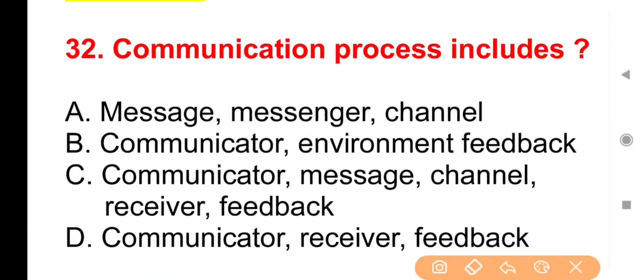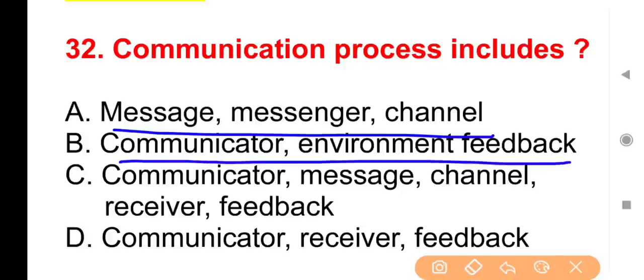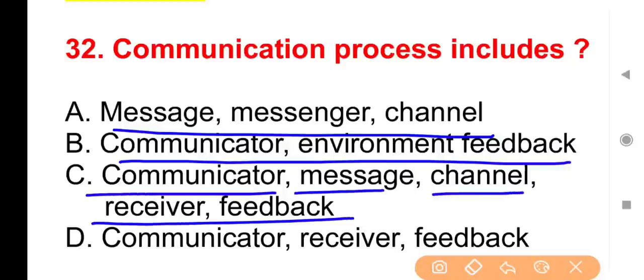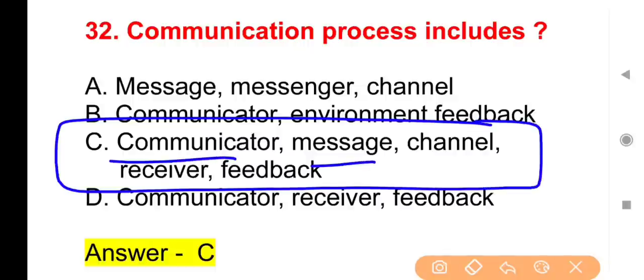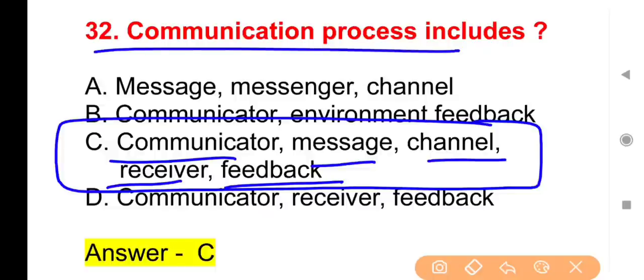Question 32: Communication process includes which components? Options: Message, Messenger, Channel, Communicator, Environment, Feedback; or Communicator, Message, Channel, Receiver, Feedback; or Communicator, Receiver, Feedback. The right answer is Option C — Communicator, Message, Channel, Receiver, and Feedback are the five components of the communication process.